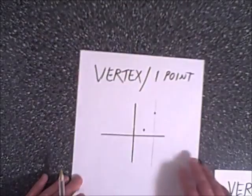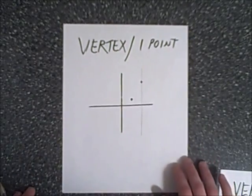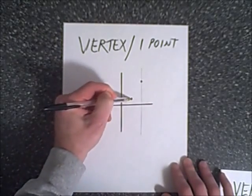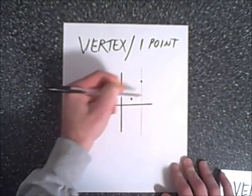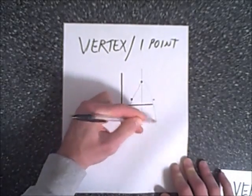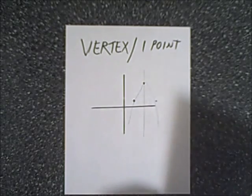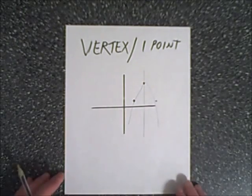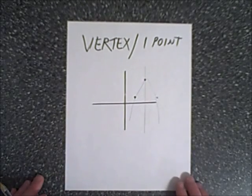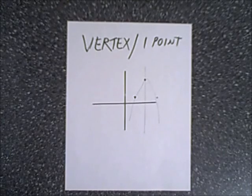The one exception would be if you were given a vertex and one point, because if you have the vertex, you've determined what the axis of symmetry is. You can take that one point, reflect it over the axis of symmetry, get a third point, and construct your parabola that way. So vertex plus one point works. And of course if you're given three points, you'll be able to do it as well.